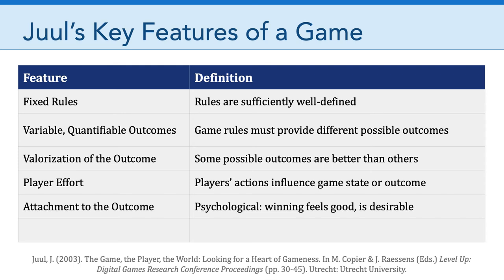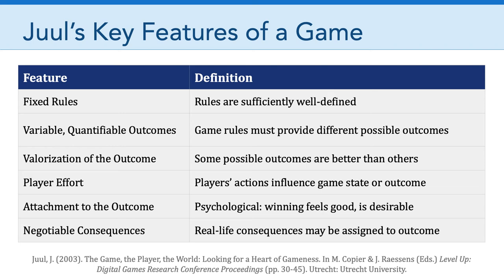Next up, we have player effort. Juul argues this is a key feature because players' actions influence the game state and the game outcome, and if there is no influence on the game state or outcome, there's no reason for the player to exert effort. Next, we have attachment to the outcome — this is really a psychological phenomenon, the idea that winning feels good and losing might not. When players put forth effort to achieve outcomes, they have attachment to winning or feeling good about how they played. And the final feature is negotiable consequences — real-life consequences may be assigned to the outcome, for example, betting money on a game or playing rock, paper, scissors to decide who's going to do the dishes.